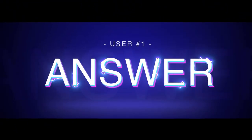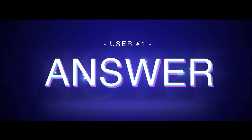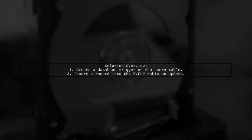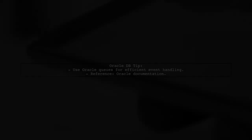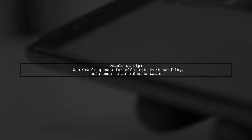Let's now look at a user-suggested answer. To trigger an event when a specific column in the user's table changes, consider creating a database trigger. This trigger will insert a record into an event table upon an update. You can then set up your application to periodically poll the event table to process these updates. If you're using Oracle DB, utilizing Oracle Queues can be particularly beneficial for managing these events.